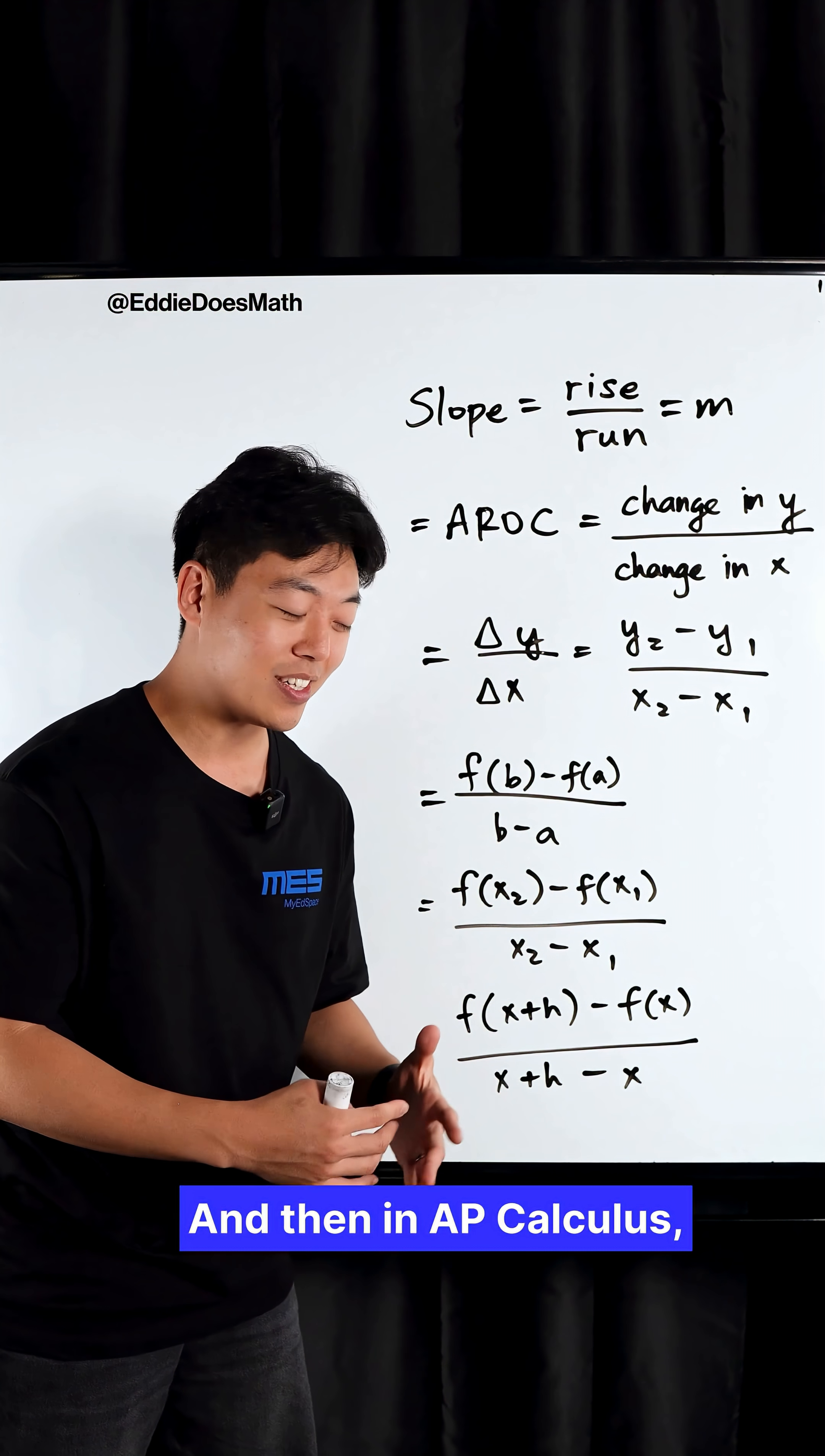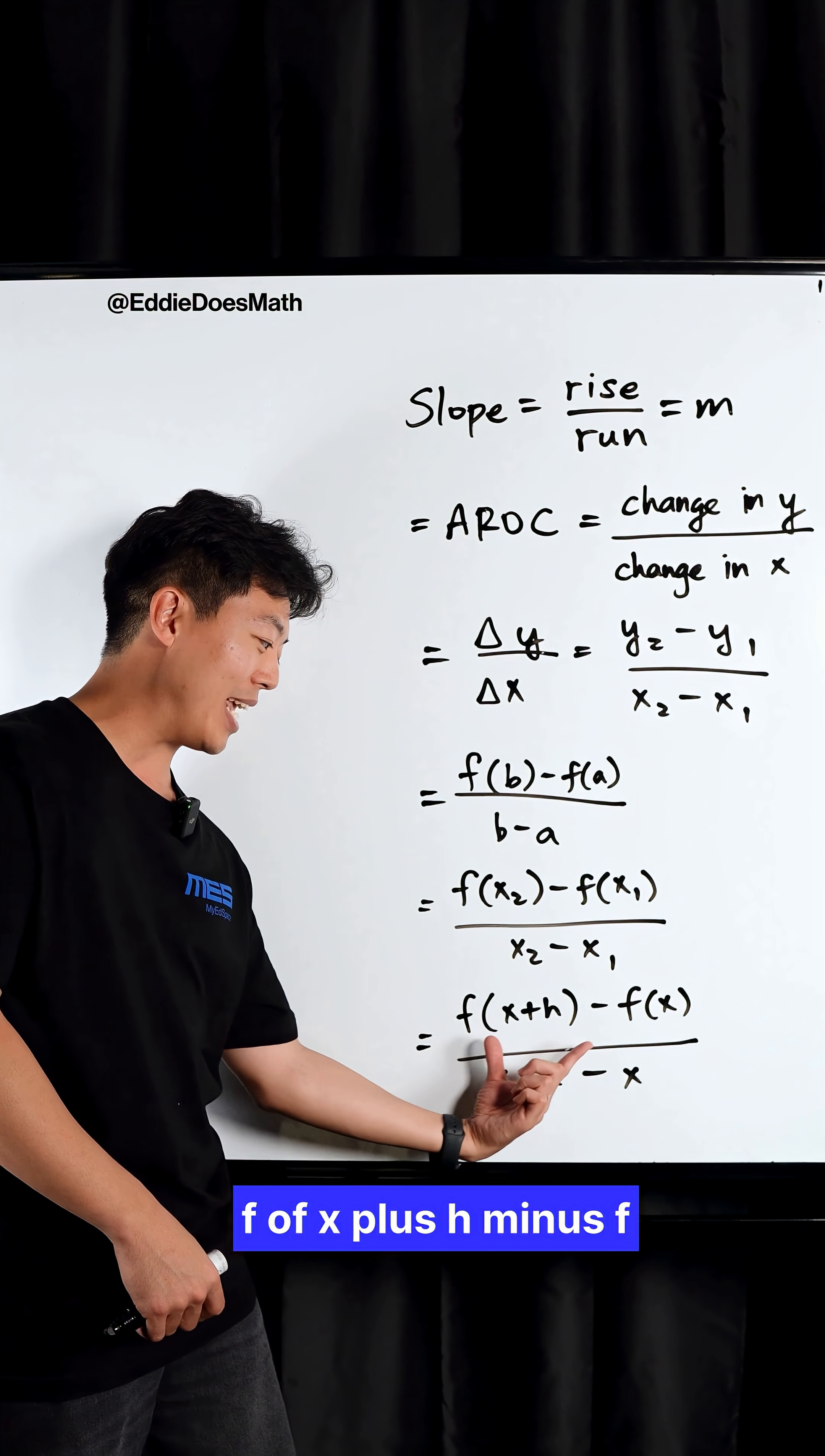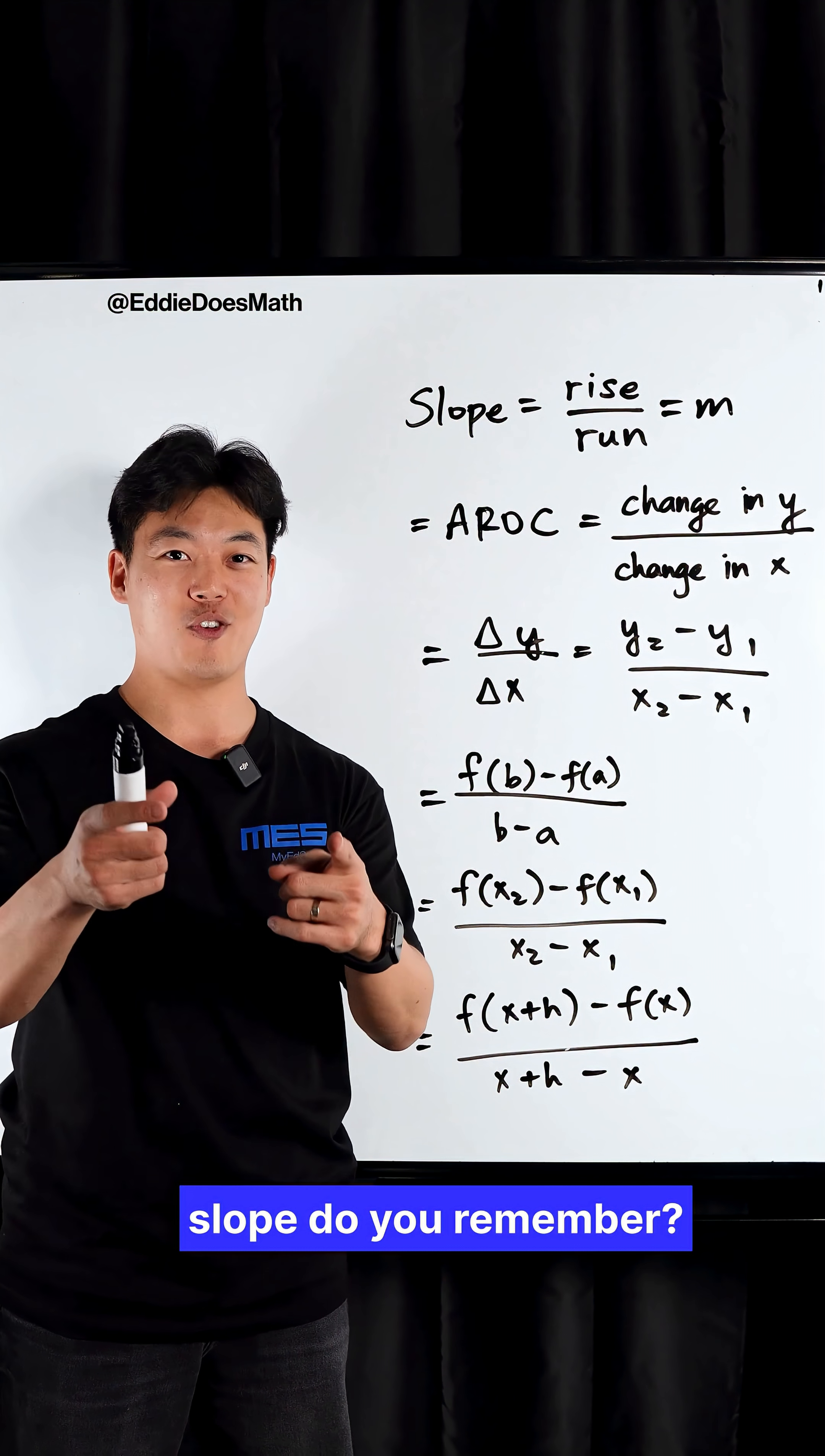And then in AP calculus, you'll start seeing it in more complex terms: f of X plus H minus f of X all over X plus H minus X. Which definitions of slope do you remember?